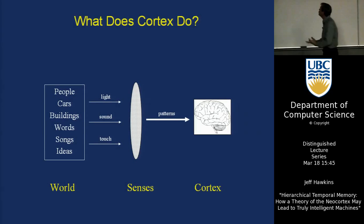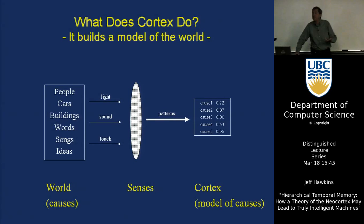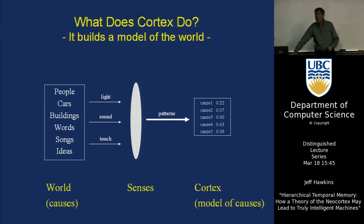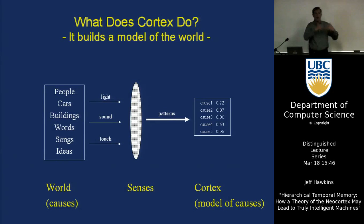What does it do with those patterns? The answer is it builds a model of the world. When you're born, your neocortex does not know about things in the world — other parts of the brain have prior knowledge but the neocortex doesn't. It has to discover them and build a model of what's out in the world. We use the word 'causes' for this — what are the ultimate causes of the patterns on your retina? We want to build a model of causes that matches the world so you can make predictions and understand it.